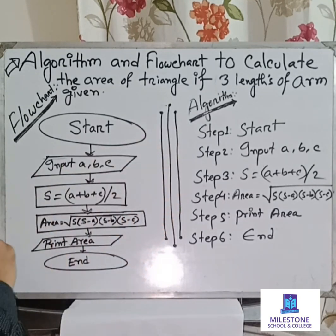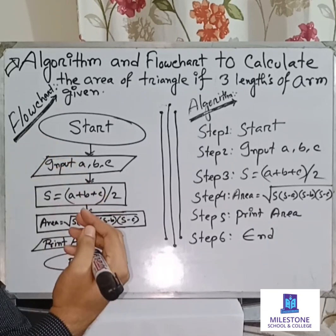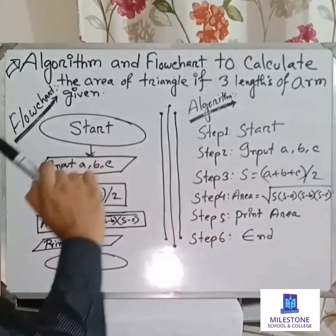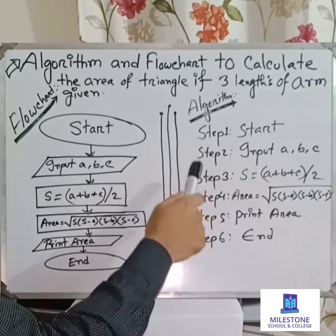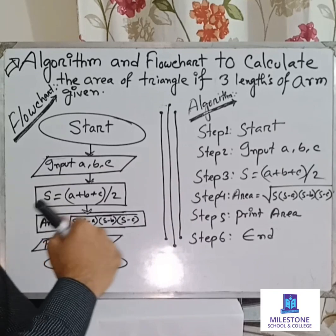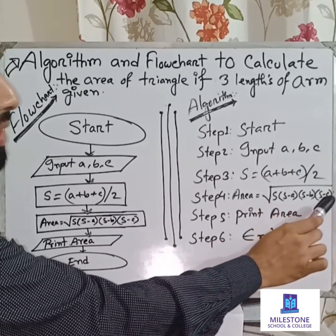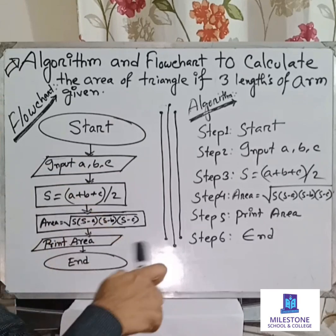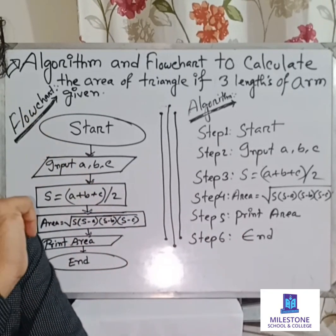Starting with the algorithm: Step 1 — Start. Step 2 — Input a, b, c (the three side lengths). Step 3 — Calculate s = (a + b + c) / 2. Step 4 — Calculate area = square root of s × (s − a) × (s − b) × (s − c). Step 5 — Print area (output the result). Step 6 — End.